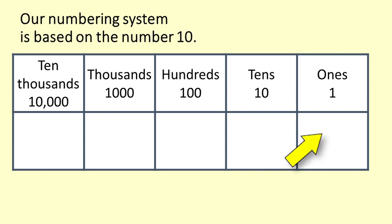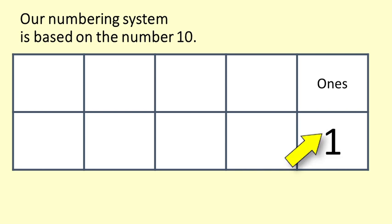The place furthest to the right is the ones. We can count up to 9 just using one column. But once we pass 9 we have no more digits so we put a 1 in the tens column to tell us we have a 10 and we need to put a 0 to make sure we know that the 1 is in the tens place.